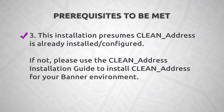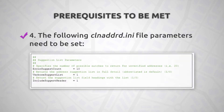Third, this installation presumes Clean Address is already installed in your system and configured. If you have not already done so, please refer to the Clean Address installation guide to install and configure Clean Address for your Banner environment. Fourth, the following clnadrd.ini file parameters will need to be set in order to enable suggestions for incomplete addresses.